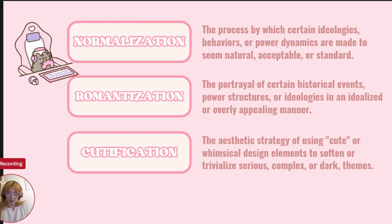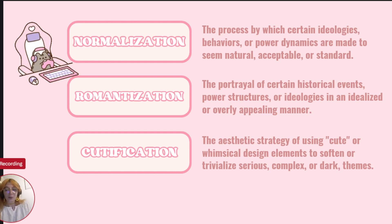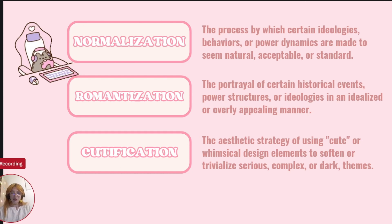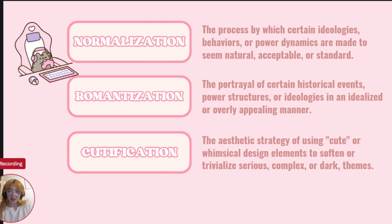Next is romantization. This is the portrayal of historical events, power structures, or ideologies in an idealized or overly positive manner. When games romanticize conquest or imperialism, for example, they often strip away the violence and oppression associated with these systems and present them as noble or even desirable. Finally, cutification. This aesthetic strategy uses cute or whimsical design elements to soften or trivialize serious, complex, or dark themes. Games that cutify colonial or authoritarian themes make them more digestible for players, often masking the underlying seriousness of these topics.